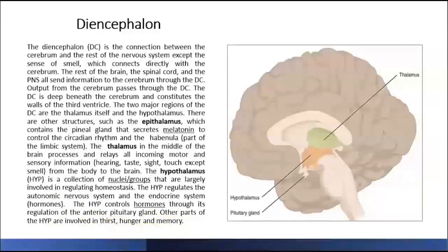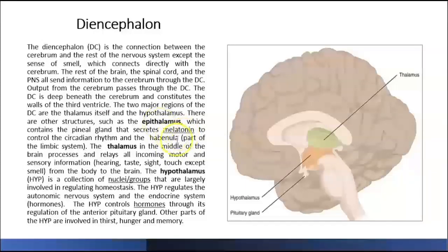The hypothalamus also has a relation with sleep and memory. The epithalamus consists of two main parts: the pineal gland and the habenula. The habenula is part of the limbic system. The pineal gland secretes melatonin, which is necessary to control the circadian rhythm — helping us distinguish between day and night.